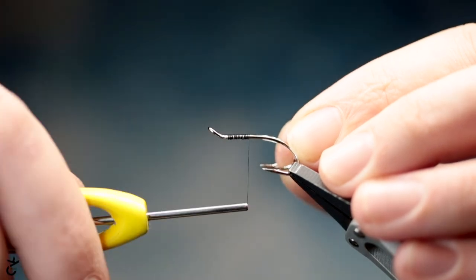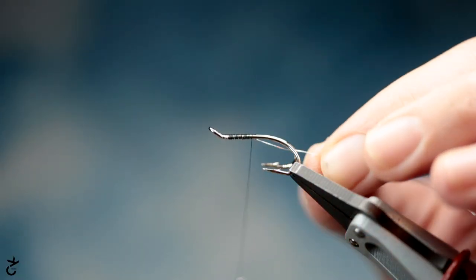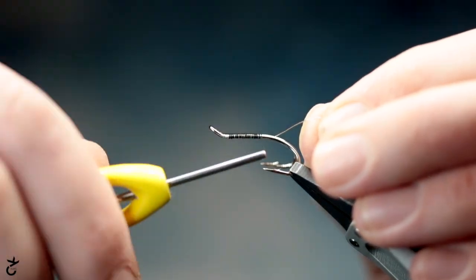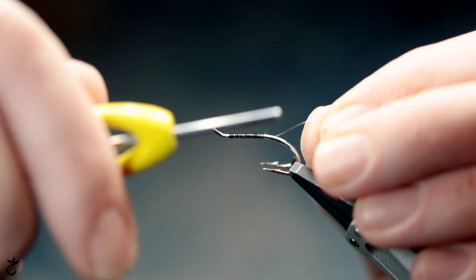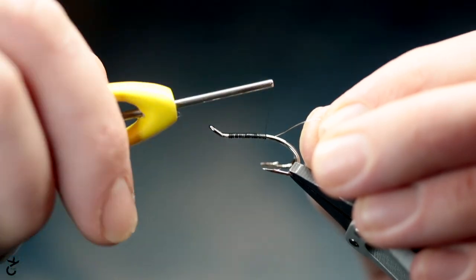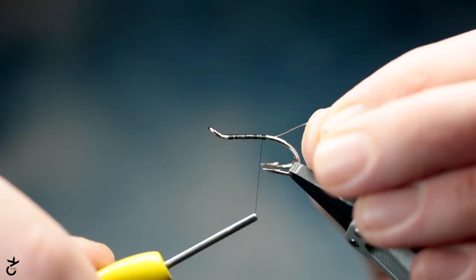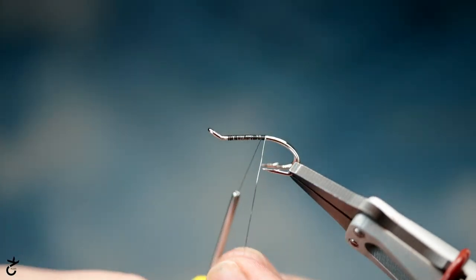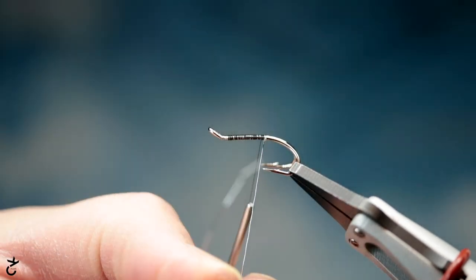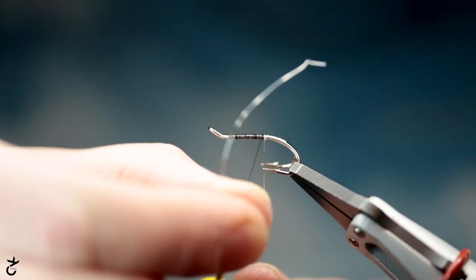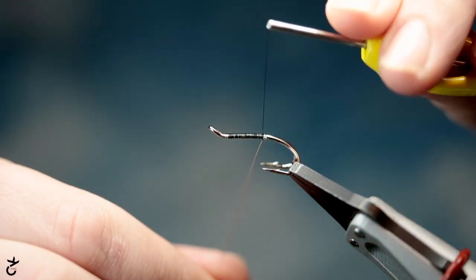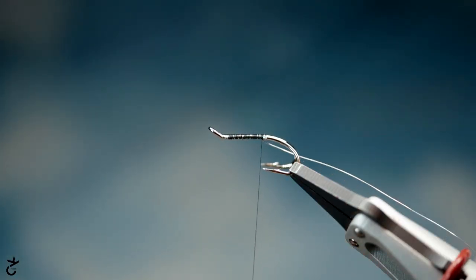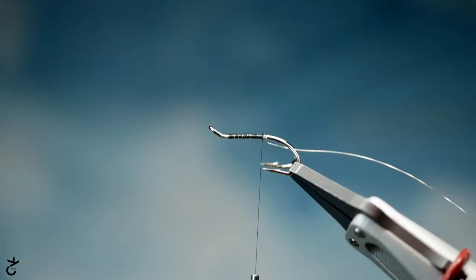So back on with a size 6 Partridge double hook, I've got 8-0 thread and I am tying in the rear tag which is a size 25 silver wire. I'm just going to do three or four turns of this. I'll just do one turn there and draw it back because I'm going to tie in the back tag.